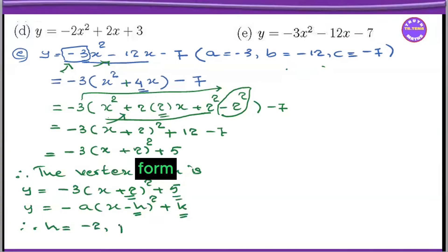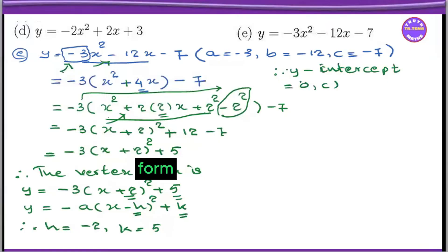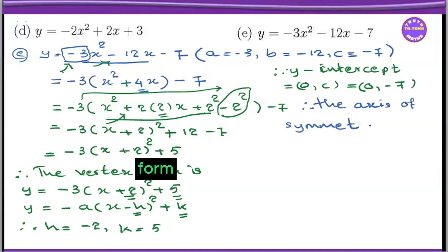Here we have the vertex form. This is the y-intercept. Therefore, y-intercept — I-N-T-E-R-C-E-P-T, intercept. The y-intercept is 0, c. So this c term is minus 7. So the y-intercept is (0, minus 7). This c term exists in symmetry. Therefore, there exists an axis of symmetry. E-X-I-S-T-S in symmetry. S-Y-M-M-E-T-R-Y, exists in symmetry.